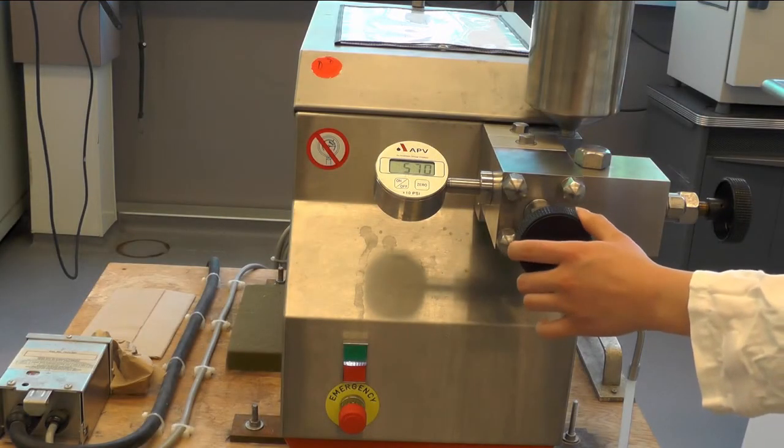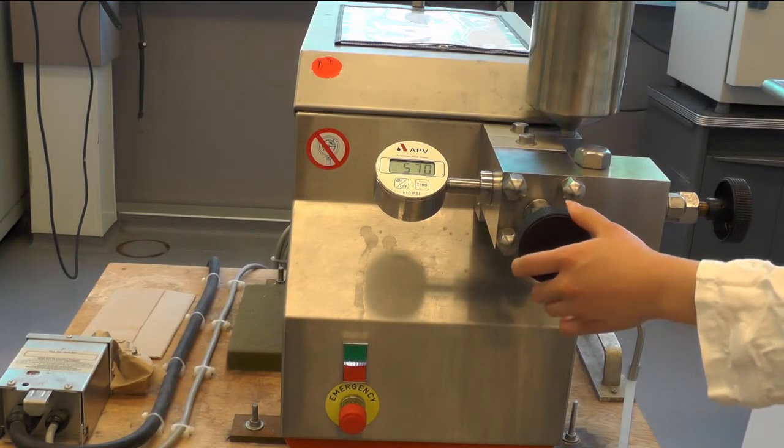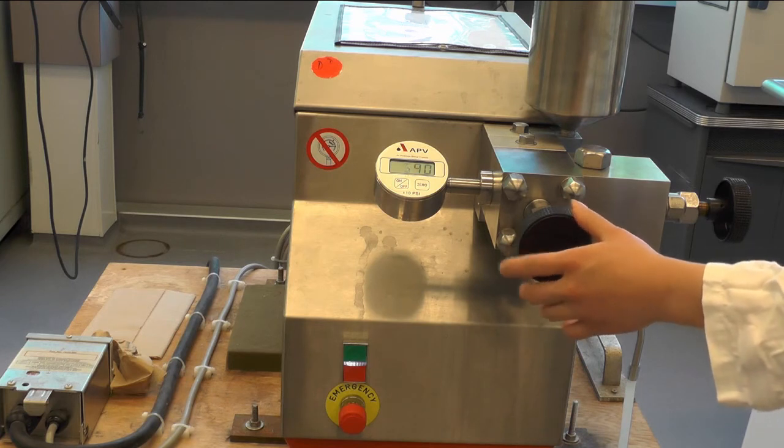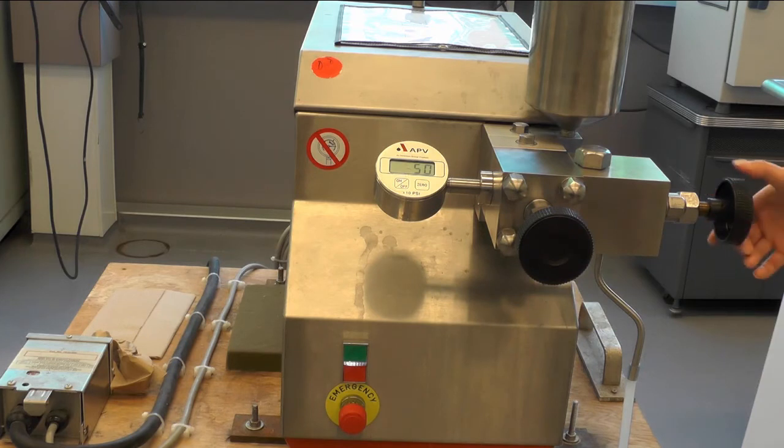After sample collection is complete, turn off the homogenization pressure by turning the second hand wheel counter-clockwise until the pressure gauge reads 60. Then turn the first hand wheel counter-clockwise until the pressure gauge reads 0.